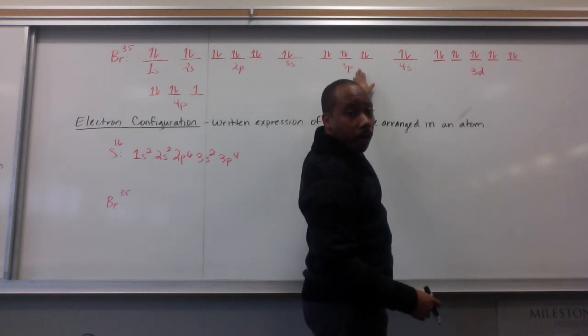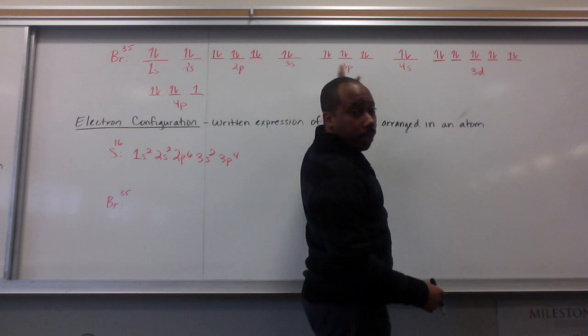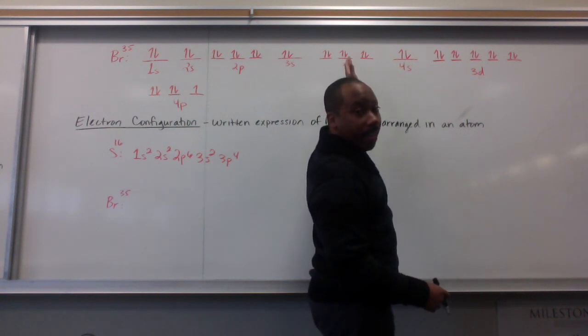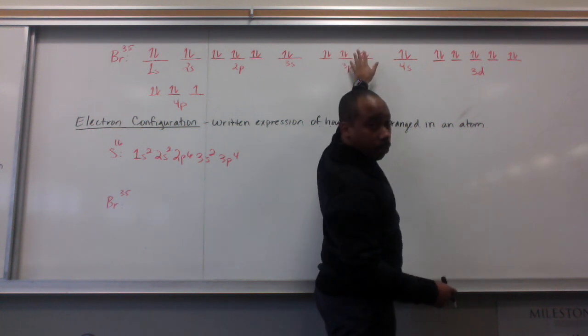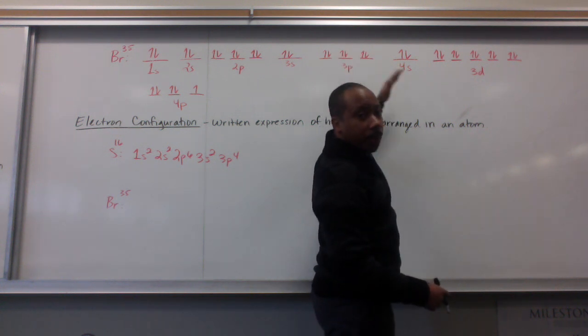So, as you can see, bromine's overall electron arrangement even has other elements' electron arrangement in it. So, if I stopped here, I'd be at sulfur. But I can't. I have to keep on going.